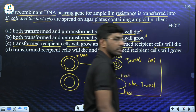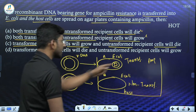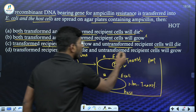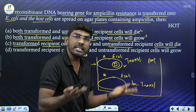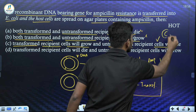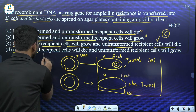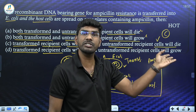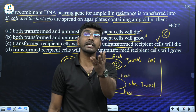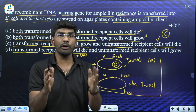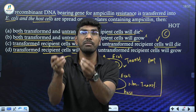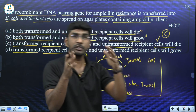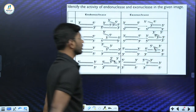The transformant will survive because it has the ampicillin-resistant gene. The non-transformant will die because it does not have ampicillin resistance. Option A says both die — incorrect, as the transformant survives. Option B says both grow — incorrect, as the non-transformant dies. The correct answer is Option C: transformant cells will grow and non-transformant cells will die. This is an important question on selectable markers and identifying transformants.